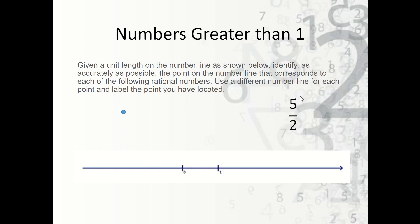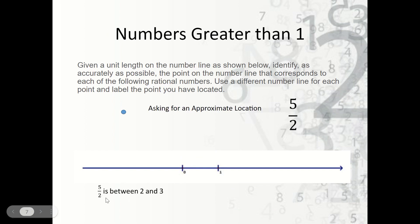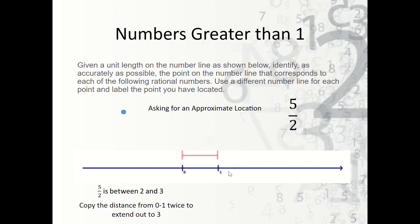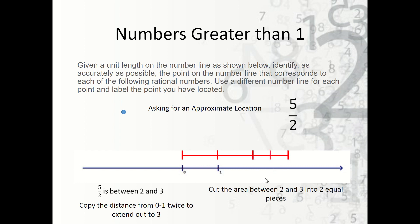Now what if the number is bigger than one? We have five halves. Again, we're finding the approximate location. We should note that five halves is between two and three because this is really two and a half. We copy the zero-to-one distance and extend it from one to two and then two to three. This is between two and three, so we cut that area between two and three into two equal pieces — right about there. So that should be about five halves. It's not exact, but it's a pretty good approximation.